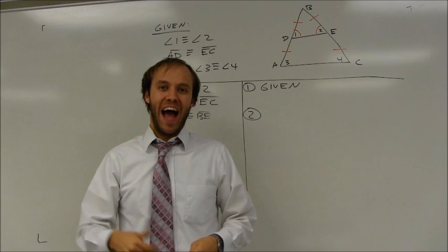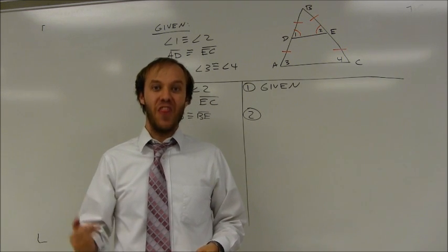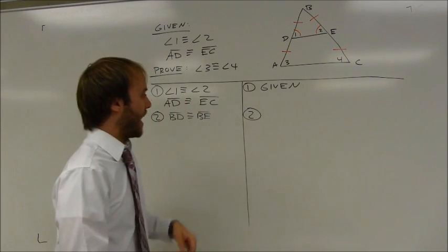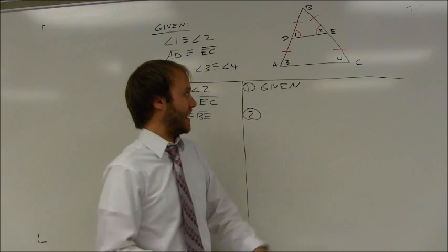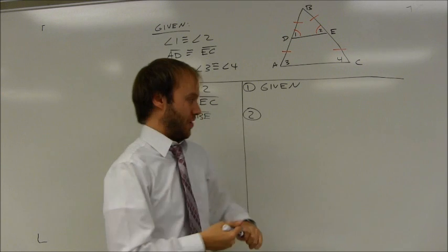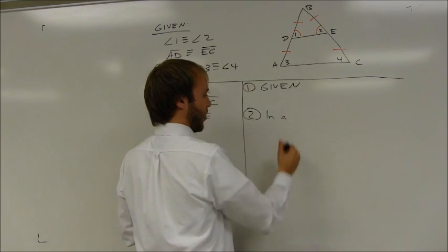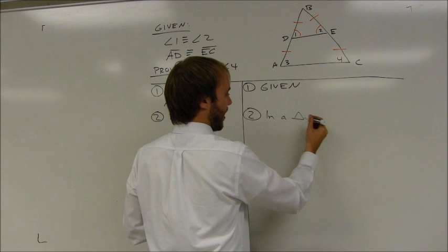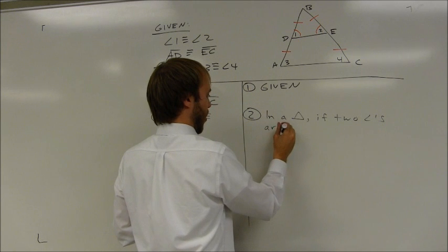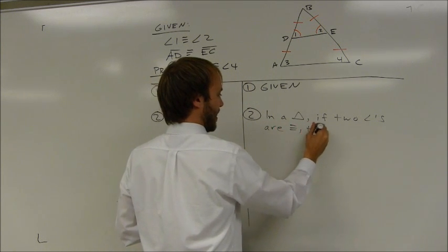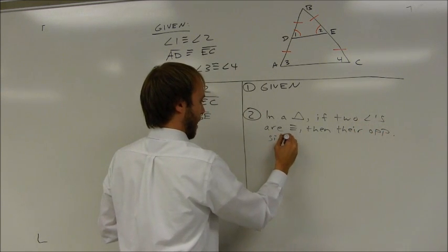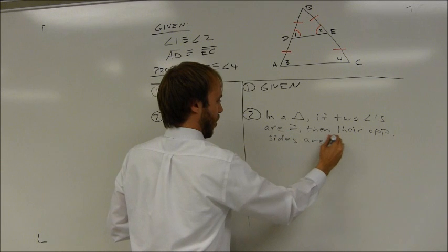Now, as a reason, I could state that this is an isosceles triangle, then state that it has two congruent sides. However, our book gives us the option of just stating that if a triangle has two congruent angles, then its opposite sides are congruent. This has to be one triangle — if two angles are congruent, then their opposite sides are congruent.